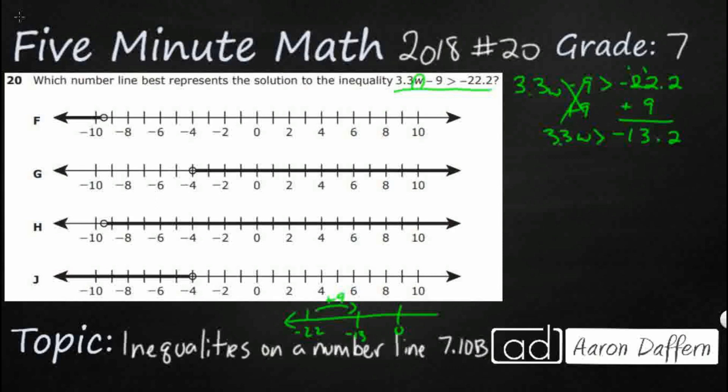Okay, so I've got 3.3W is greater than negative 13.2. So now the only thing I need to do is divide both sides by 3.3. It's a positive 3.3 so I'm not needing to flip that inequality.